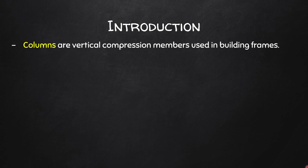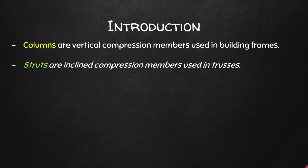Sometimes we hear terms like columns and struts, so I'd like to clarify what a strut is. A strut is also a compression member, but unlike columns it is inclined and mostly used in trusses. So columns are vertical members used in building frames, whereas struts are inclined members used in trusses. Here I will concentrate on columns only.